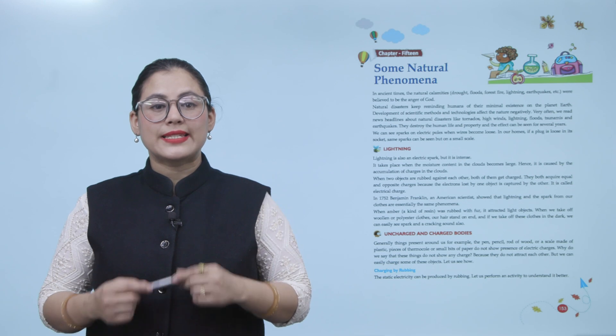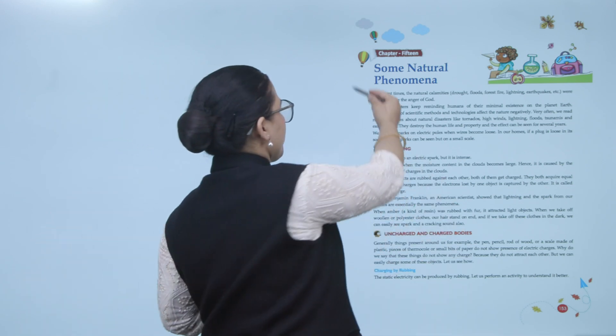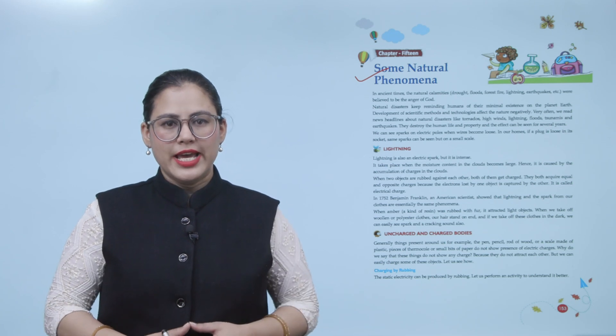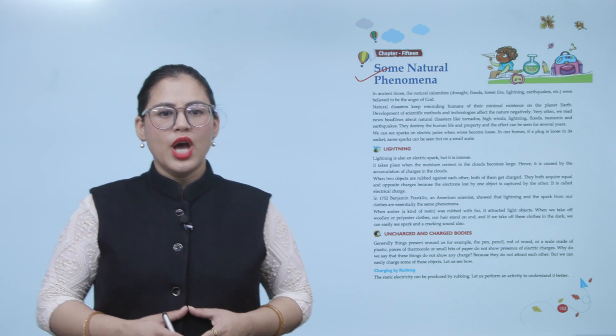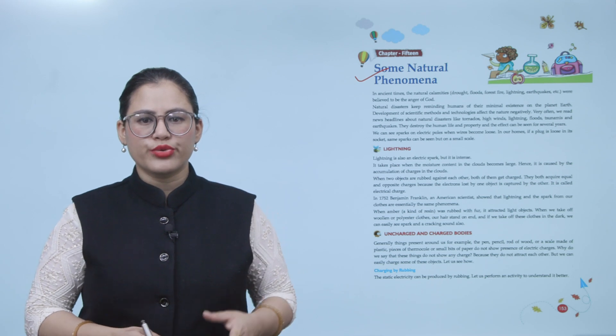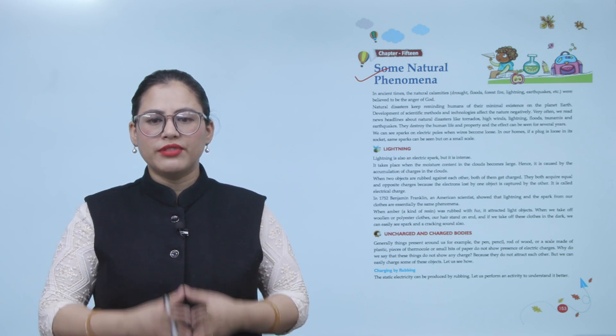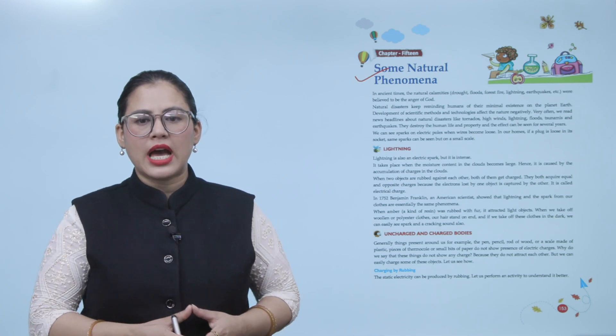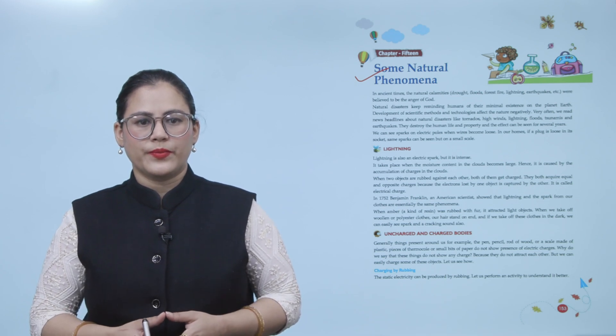Hello students, I hope you all are doing good. Let's start today's chapter: Some Natural Phenomena. In ancient times, natural calamities like drought, floods, forest fire, lightning, and earthquakes were believed to be the anger of God. Natural disasters keep reminding humans of their minimal existence on the planet Earth. Development of scientific methods and technologies affects nature negatively. Very often we read news headlines about natural disasters like tornadoes, high winds, lightning, floods, tsunamis, and earthquakes, which destroy human life and property, and the effects can be seen for several years.